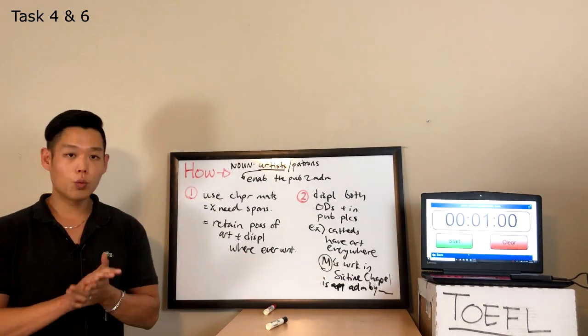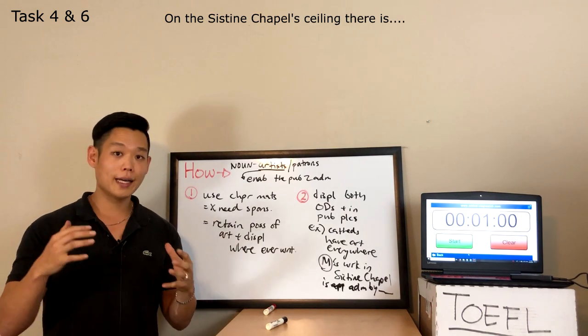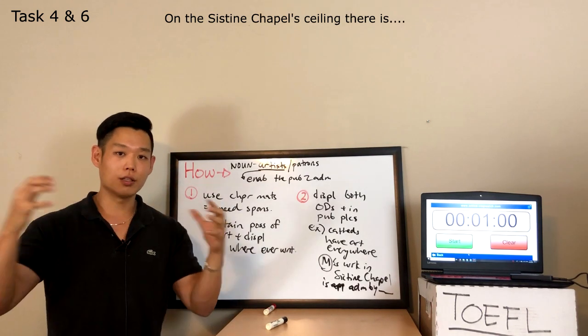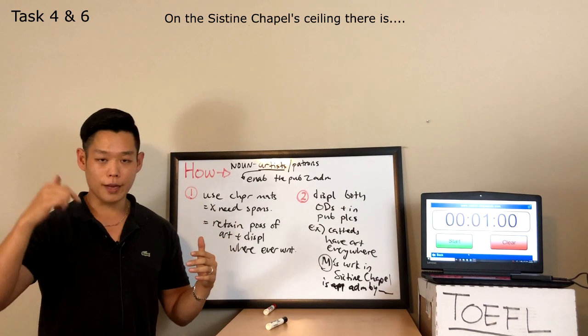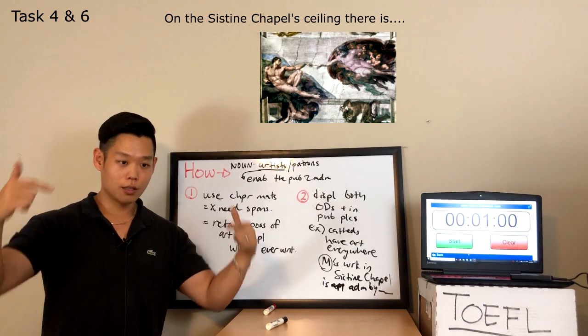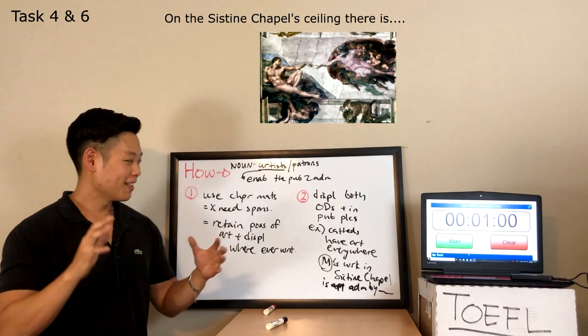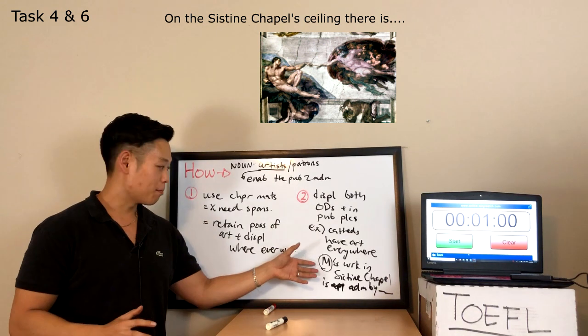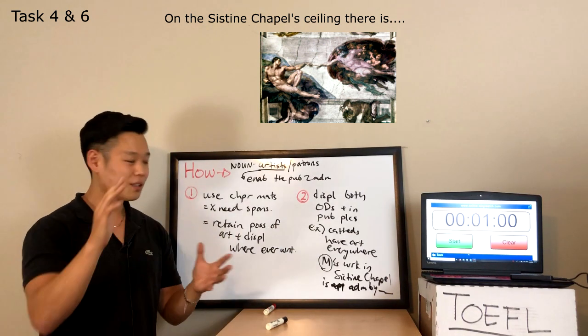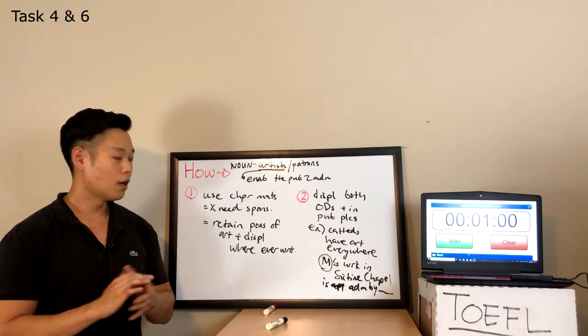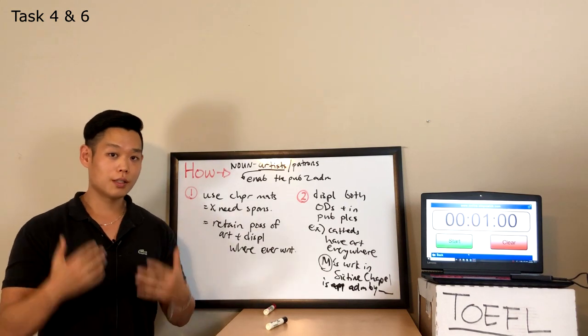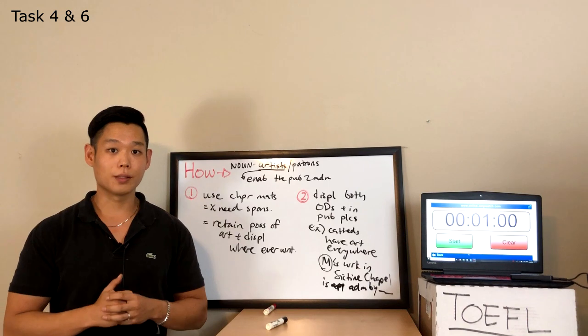Now, if you don't know what the Sistine Chapel is, the Sistine Chapel has the painting, the huge mural of Adam and God trying to touch index fingers. That's the work that Michelangelo painted on the ceiling of the Sistine Chapel. All right, now that we know what I'm going to say for the sample response, let's listen to the sample response.